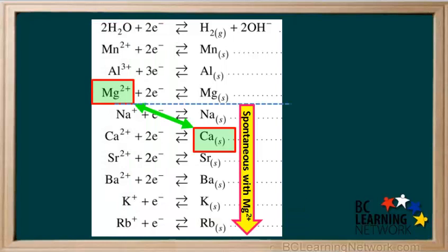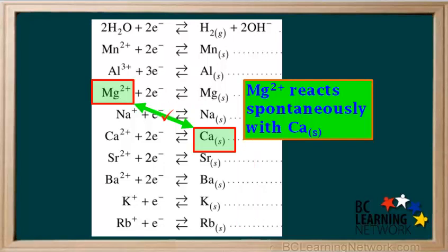Let's look at an example. Mg2+ will react spontaneously with everything below it on the right. And calcium metal is below it on the right, so the reaction between Mg2+ and calcium is spontaneous. Notice that a backslash can be drawn between the two species. So when a backslash can be drawn between two species, we can say that they will react spontaneously with each other.